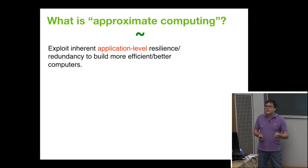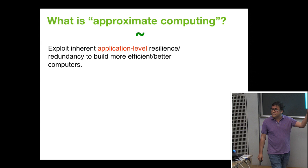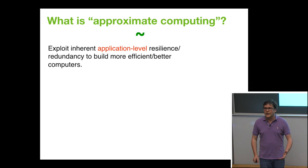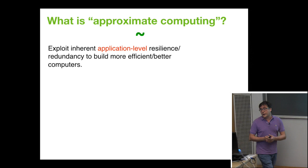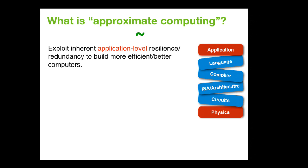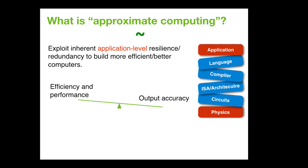What we want to do is honor the application — I cannot change physics, but everything in between, let's relax those interfaces to get more efficiency. We want to build a knob that trades off efficiency and performance — trades off output accuracy for better efficiency and performance throughout the stack: the circuit layer, architecture interface, compiler, language, and so on.